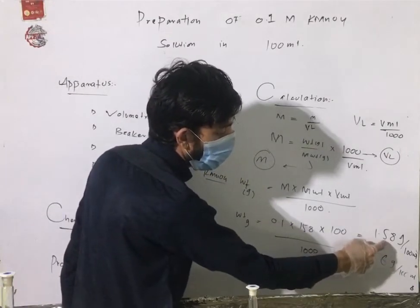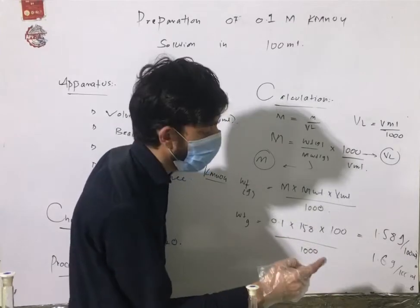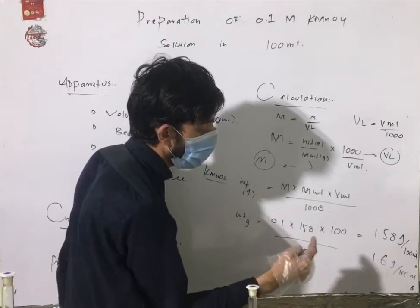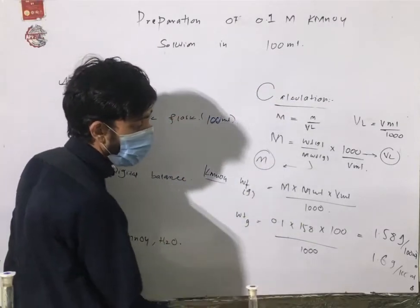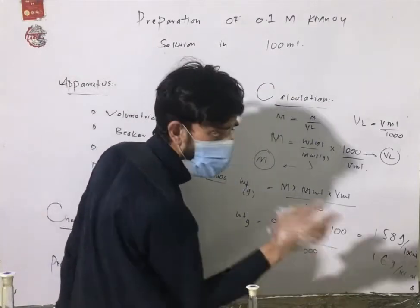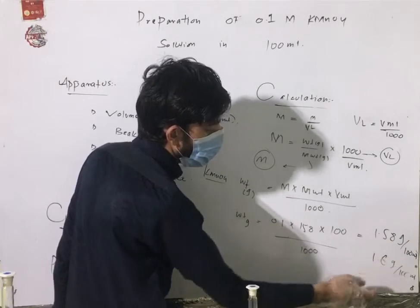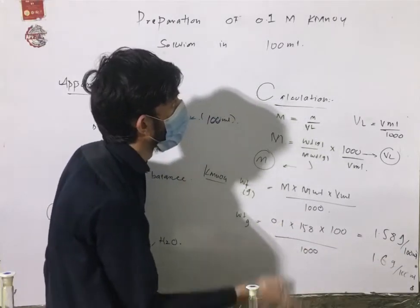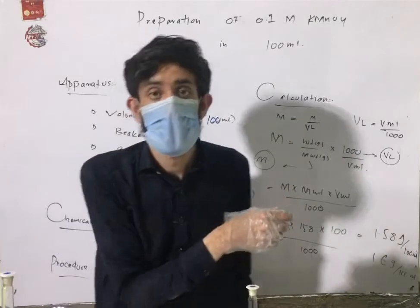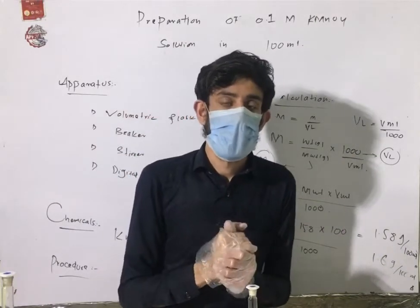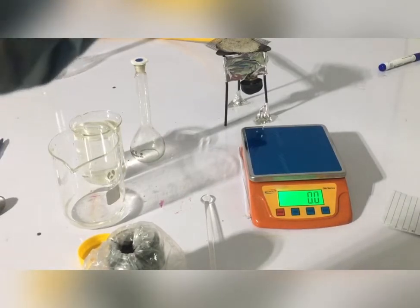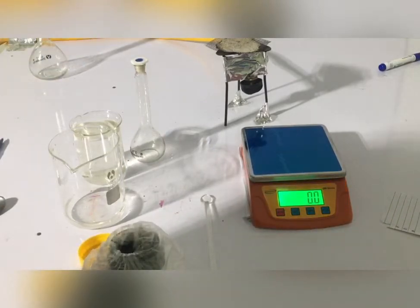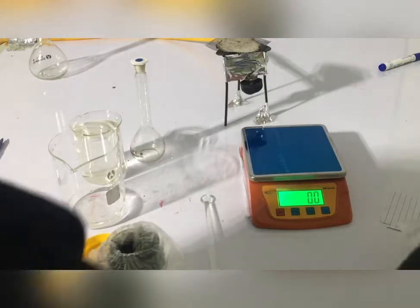1.6 to 1.8 grams per 100 ml water. This is the design and the solution is 0.1 molar. This is around 1.6 grams per 100 ml. The calculation of the 1.6 grams is done using a digital balance.